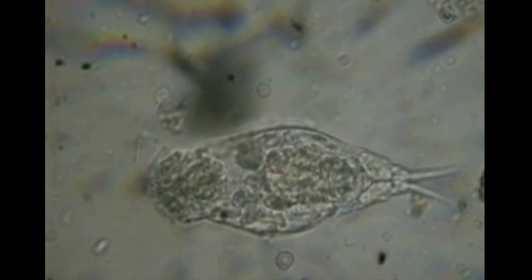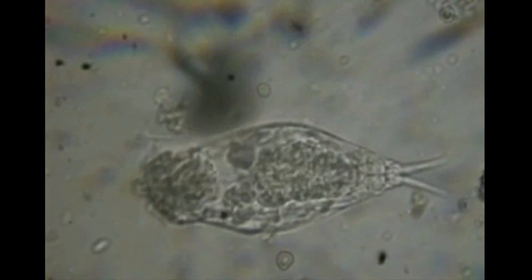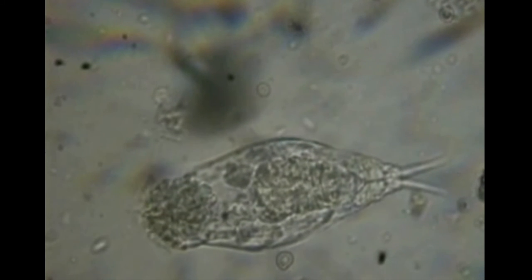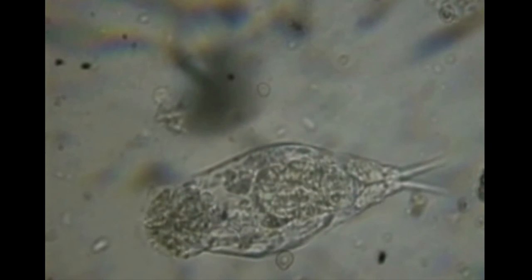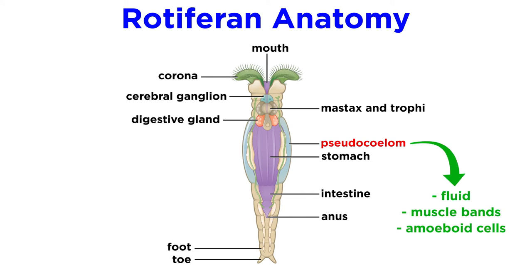Rotifers are able to move by creeping or leech-like movements aided by their foot, or by swimming with the coronal cilia. The pseudocoelom of rotifers is quite large, and occupies the space between the body wall and internal organs. It is filled with fluid, occasional muscle bands, and a network of amoeboid cells.